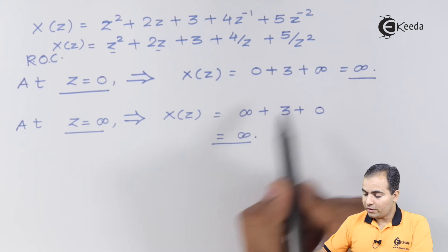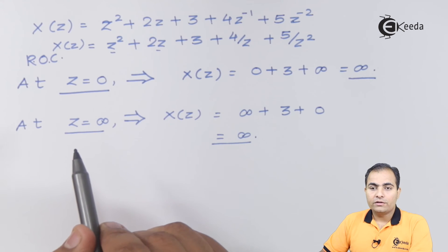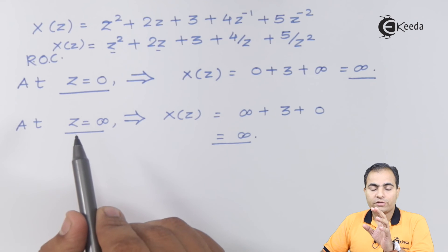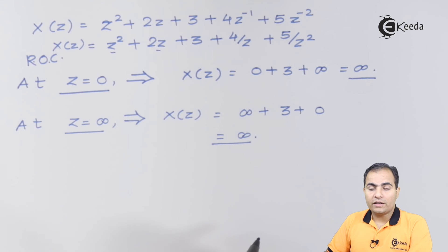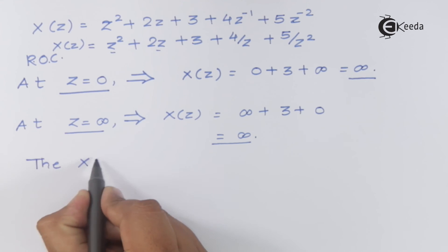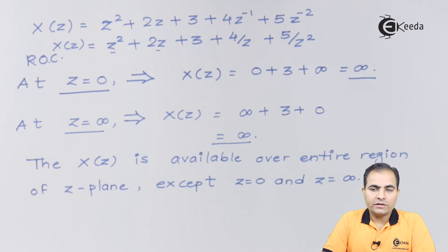Whenever you are getting an infinite result at both z equals zero and z equals infinity, the ROC is the entire Z-plane except z equals zero and z equals infinity. So the final statement is: ROC is the entire Z-plane, except z equals zero and z equals infinity. That's all for now — thank you for watching, subscribe to Ikeda for more videos.